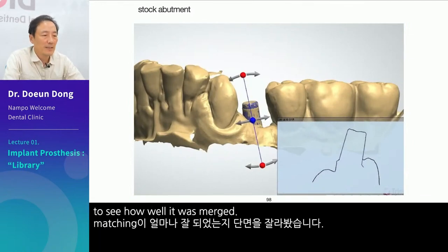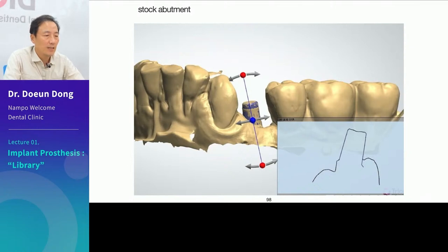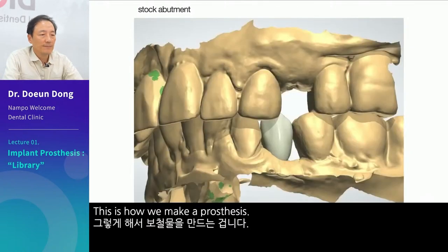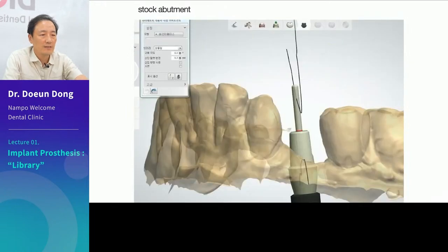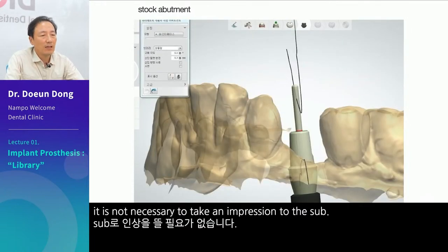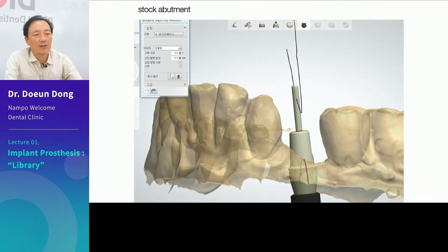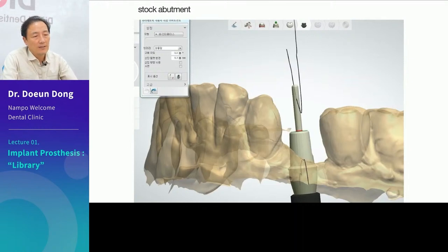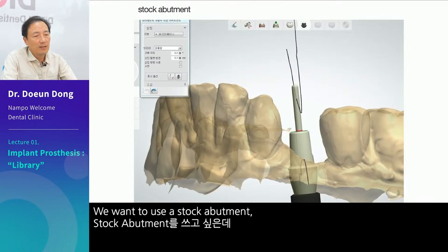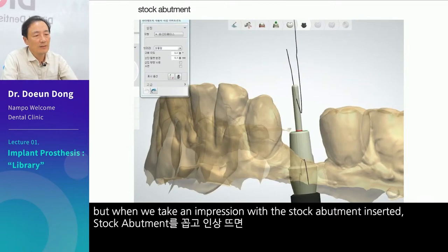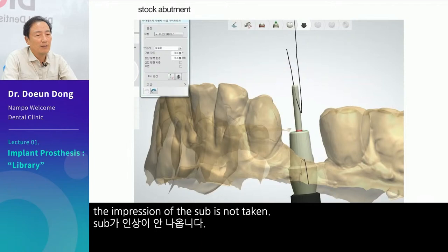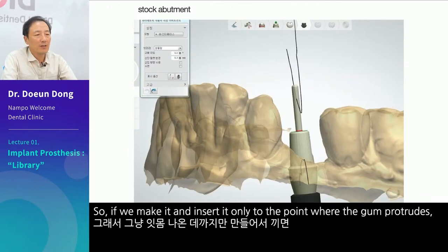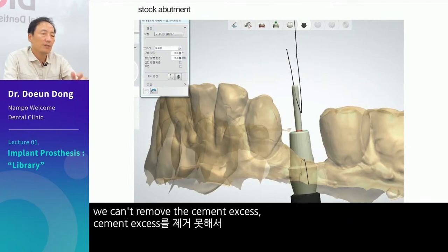We cut a cross section to see how well it was merged — it was perfect. Even if you use a stock abutment, it is not necessary to take an impression to the sub. Conventional analog users may have seen patients with inflammation of the gums from earlier. When we take an impression with the stock abutment inserted, the impression of the sub is not taken. So, if we make it and insert it only to the point where the gum protrudes, we can't remove the cement excess.